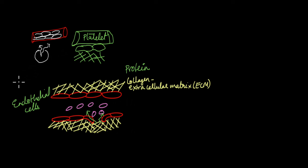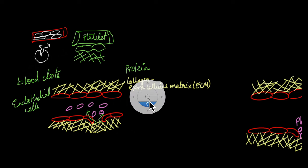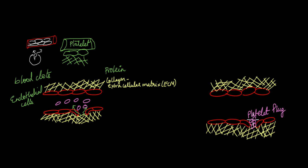When platelets come in contact with collagen, they begin to clump together, forming a platelet plug at the site of injury. Now this platelet plug is a temporary structure. It blocks the blood flow — blood cannot escape from this injury site — but this is not enough to completely stop the blood flow and to start the healing process.